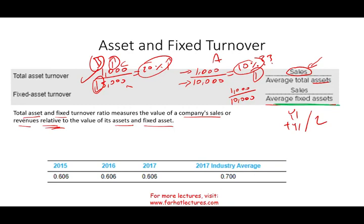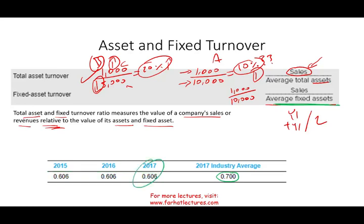To make sense of these ratios, let's compare them year to year. For example, this company is roughly consistent across 2015, 2016, and 2017 — but notice the average industry ratio is 0.7. So the industry is performing better than this company. The industry is generating $0.70 in sales for every dollar in assets, while this company is only generating $0.60. That's a significant difference, and this is how you compare ratios to make sense of them.